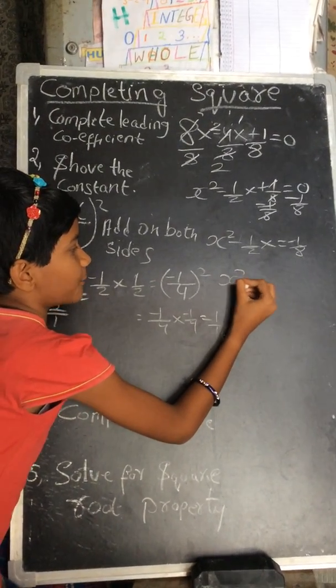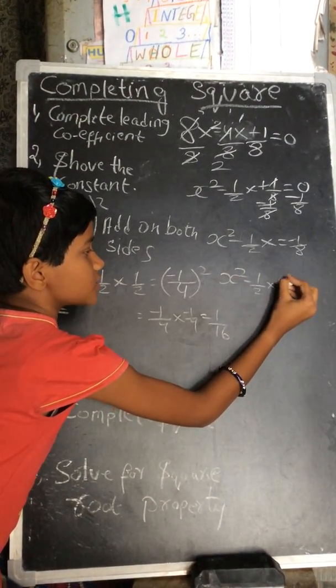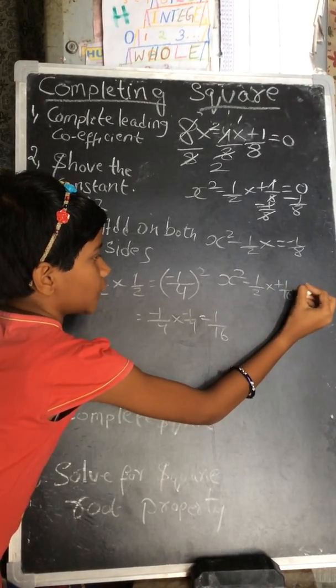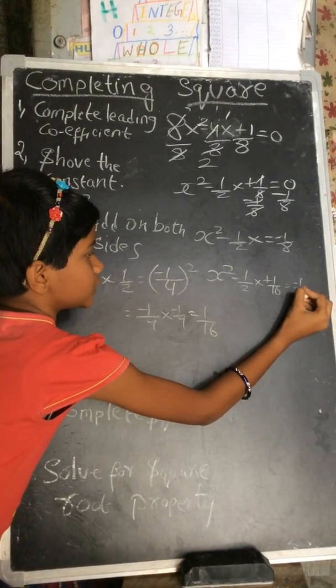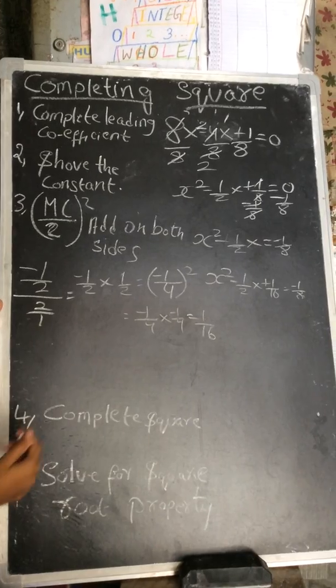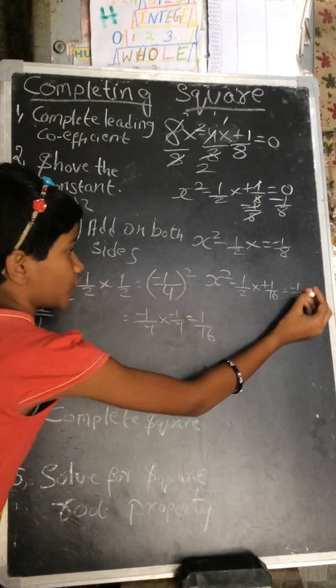Add this to both sides: x squared minus 1 by 2x plus 1 by 16 equals minus 1 by 8 plus 1 by 16. Whatever you do on the left side, you should do the same thing on the right side.